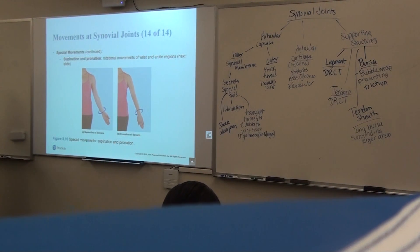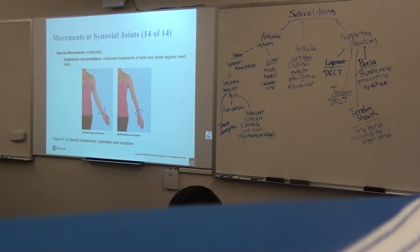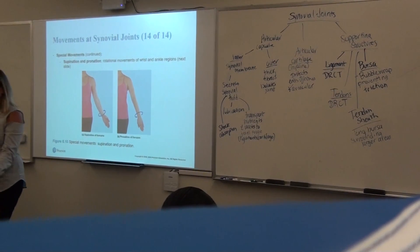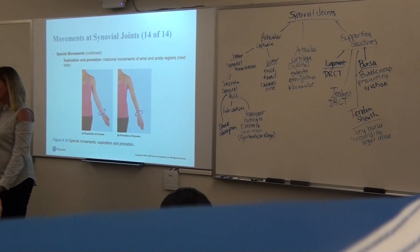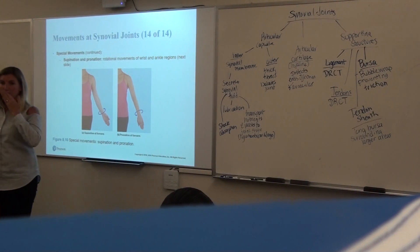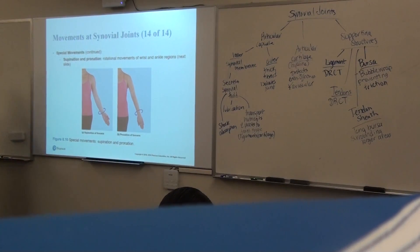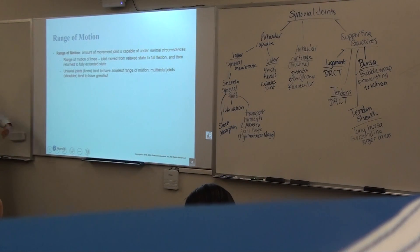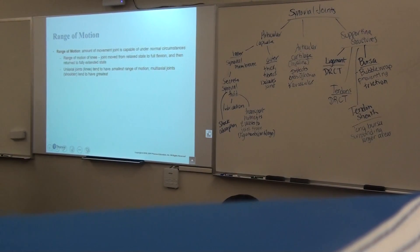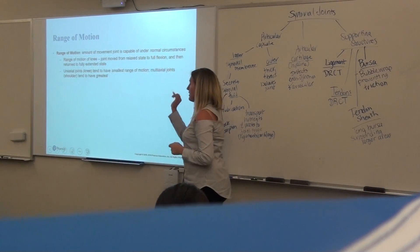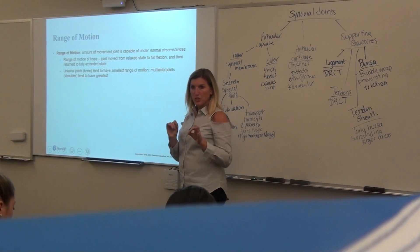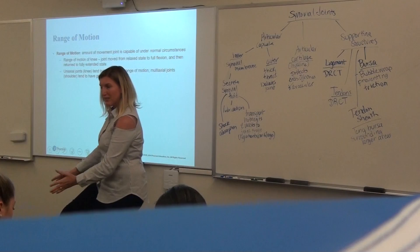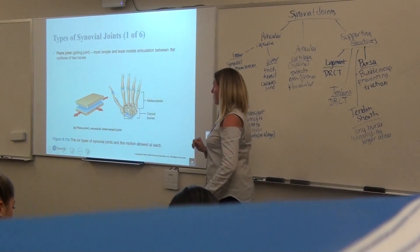Angular motions of your forearm: supination and pronation. In anatomical position your arms are in a supine position — palms up. If you pronate, you're rotating your forearms posterior. I remember it as: you eat your supper supinated — palms up and open. Pronation is backwards. Range of motion is related to that stability and movability piece. Our knee, for instance, is just a simple hinge joint — just back and forth, no lateral motion.